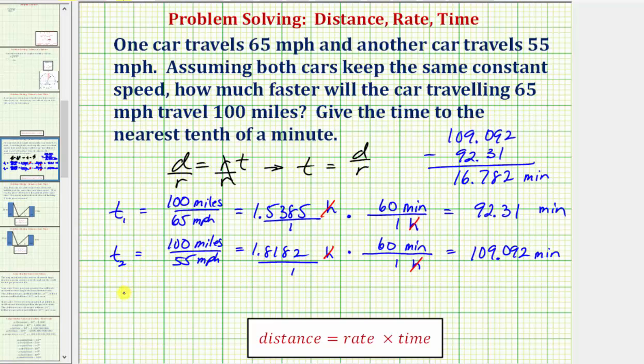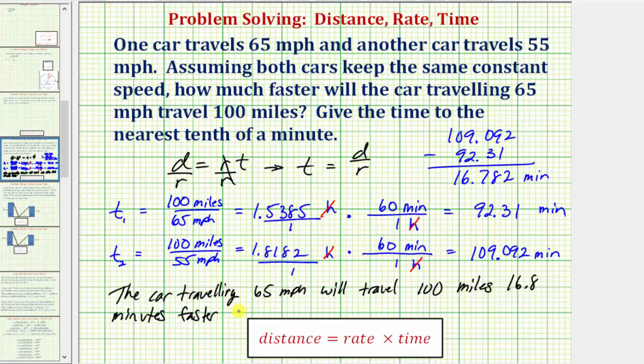So the car traveling 65 miles per hour will travel 100 miles approximately 16.8 minutes faster than a car traveling 55 miles per hour.